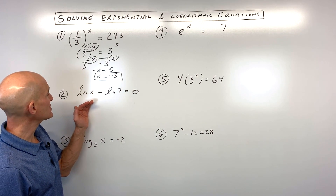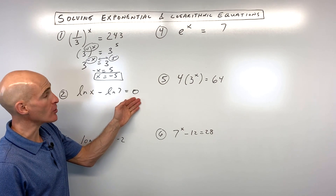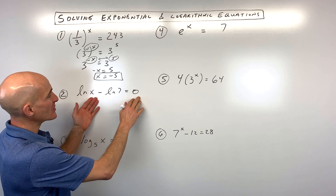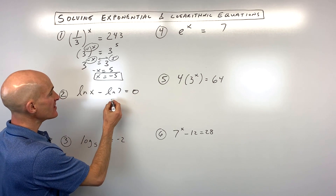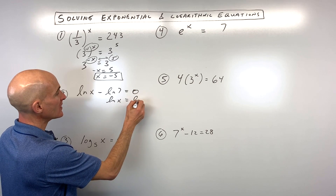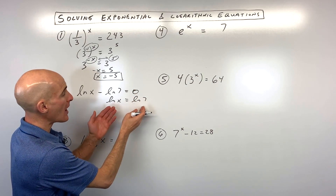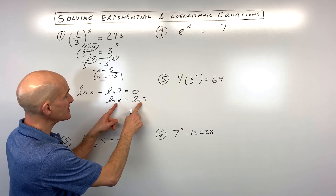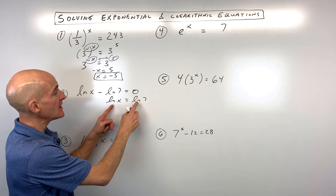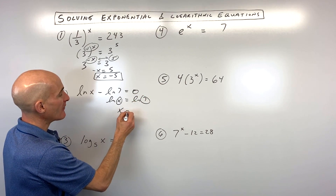Okay, let's go to number two. This is a log equation: natural log of x minus natural log of 7 equals 0. I'm going to add natural log of 7 to the other side, so we have natural log of x equals natural log of 7. This is called the one-to-one property of logs. As long as the bases are the same — natural log is base e — we can set the arguments equal to one another, and we have x equals 7.